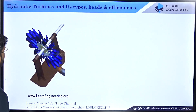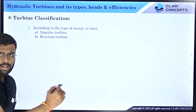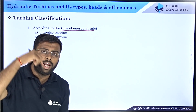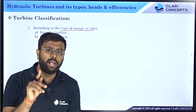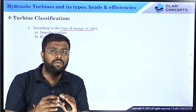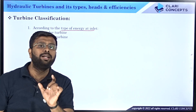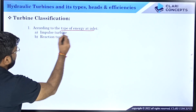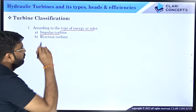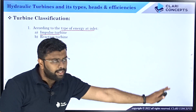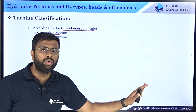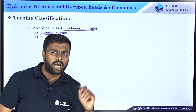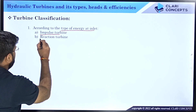Turbines are classified based on different terminologies. First, according to the type of energy at the inlet: Pelton converts only kinetic energy of water to mechanical energy of the shaft — at its inlet only kinetic energy is present, so it is called an impulse turbine. Francis and Kaplan are equipped to convert both kinetic energy plus pressure energy of water into mechanical energy, so Francis and Kaplan are called reaction turbines.